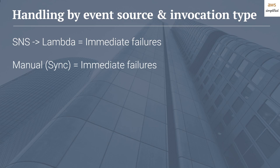For manual synchronous invocations, the behavior is similar to SNS — an immediate failure scenario. If a REST API is hitting a Lambda function synchronously and receives a throttling exception, you handle this in your application logic. You can back off for a period of time — sleep the thread making the call for 50 milliseconds and try again. If you fail again, back off a little more — maybe sleep for 100 milliseconds. You can implement exponential backoff, attempting multiple times before throwing a permanent exception back to your client.